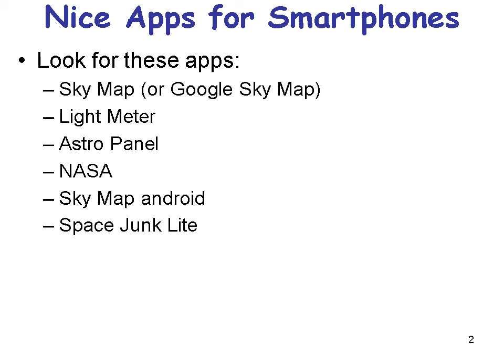There are some nice apps for smartphones you may want to look into. There's SkyMap for Google Android, and these all work on the iPhone as well. Google SkyMap is specifically for Android. The light meter is interesting because it shows you how bright something is. Astro Panel, NASA, SkyMap for Android, and Space Junk Light, which shows you all the stuff orbiting the Earth — like the space junk depicted in the Sandra Bullock movie Gravity.